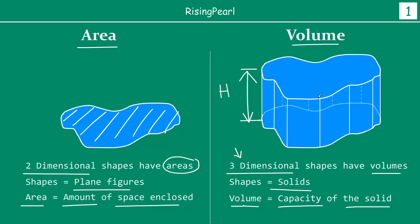When we talk about volume, it is the same idea as area — that is, the amount of space which is occupied inside the shape. We sometimes also use the term capacity to refer to the same thing. One important point is that the volume of a shape can also be expressed as the amount of gas or the amount of liquid which can be filled into the solid.